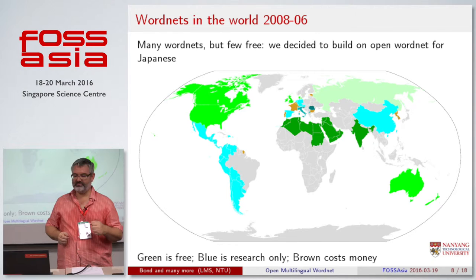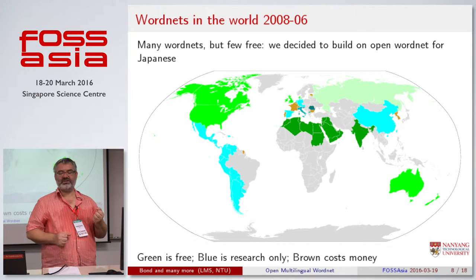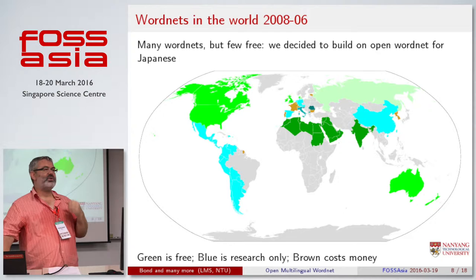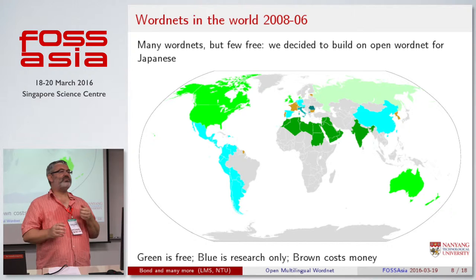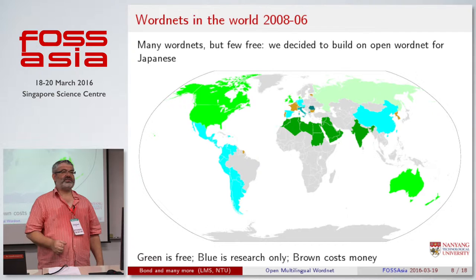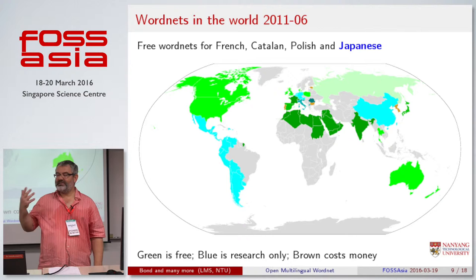I thought, great, there are lots of wordnets — I'll collect them all and do this. But it turned out that in 2008, we had free wordnets for English, free wordnets for Arabic (funded by the CIA), and a nice wordnet for Hindi. And that was about it. There were some free-as-in-beer wordnets with restrictions on redistribution, and some very expensive wordnets in various countries. So I said, this is silly — we'll make the Japanese one open at least.